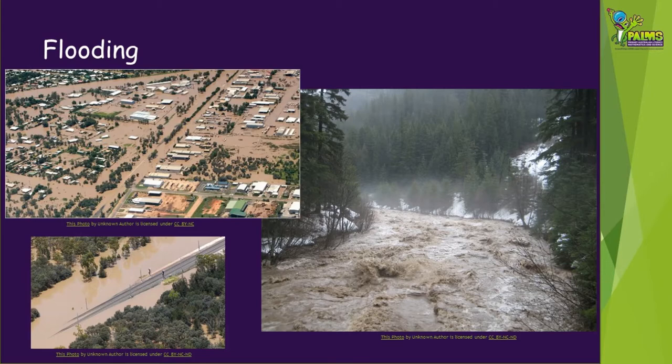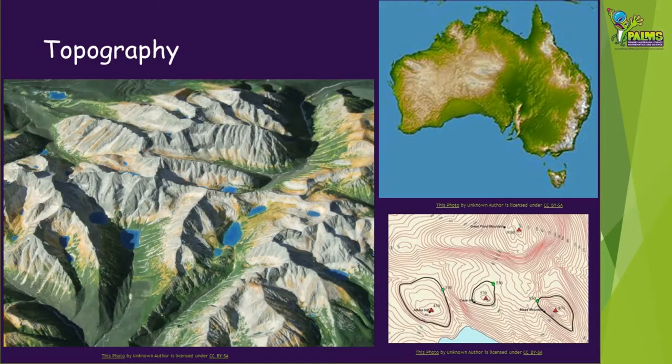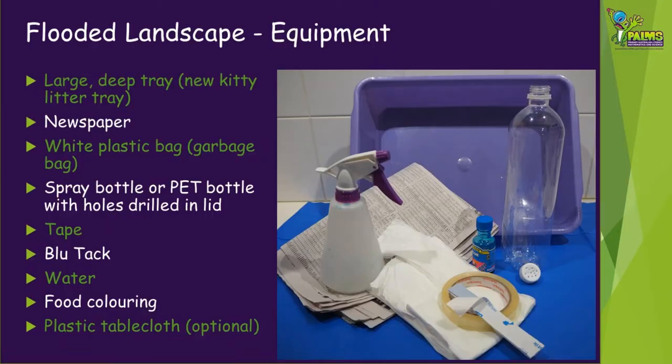The underlying geology of an area can affect how quickly the water soaks in, and the topography of an area will affect where the water collects. Topography is the shape and features of a landscape and includes aspects like the land height above sea level. In this video we will demonstrate how to make your own landscape and examine how rainfall and runoff behave.